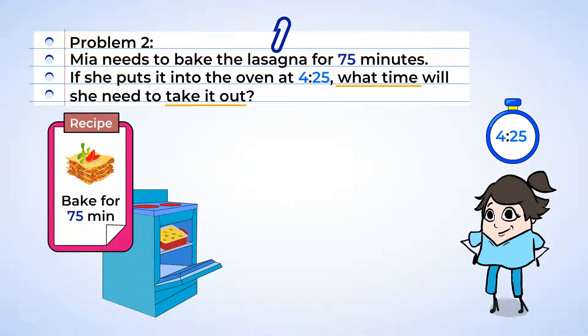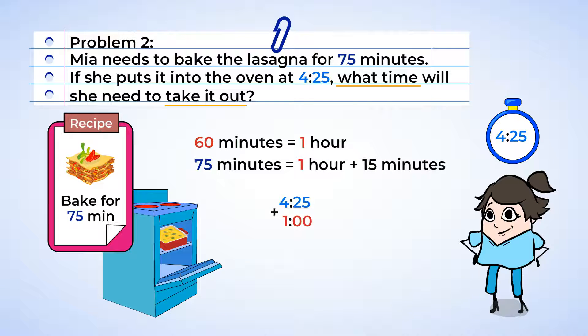Well, we can most certainly help her with this. We know that there are 60 minutes in an hour. And this means that 75 minutes is 1 hour and 15 minutes. So 1 hour after 4:25 is 5:25. And 15 minutes later, it'll be 5:40. The lasagna will be ready at 5:40. I'm setting a timer and I'm coming back then.